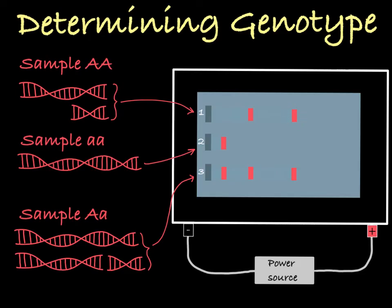In lane two, the DNA contained only little a alleles, which did not get cut by the restriction enzyme and therefore remained large. These large molecules did not travel very far in the gel, and because they were all the same size, we see only one distinct band of DNA in this lane.